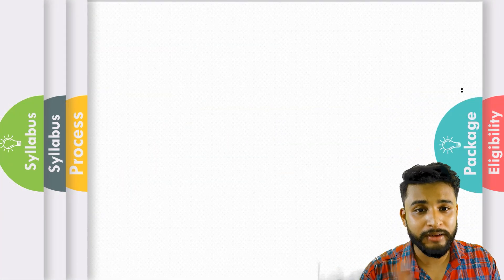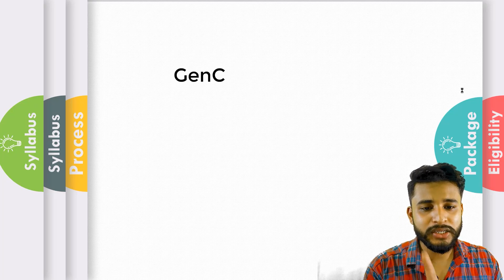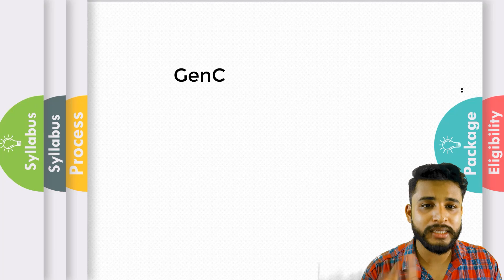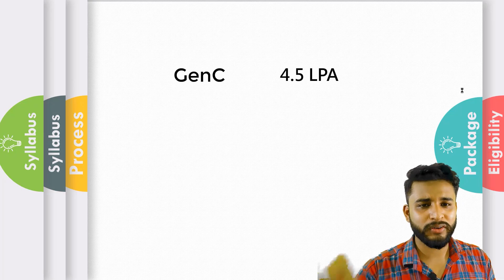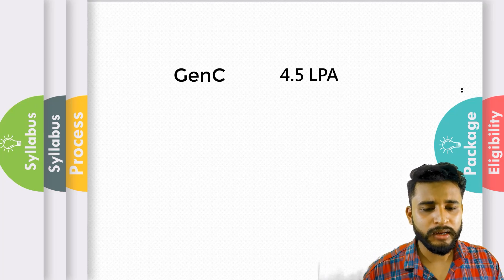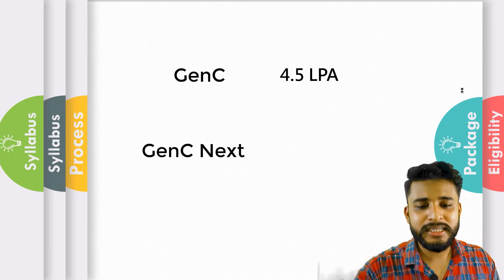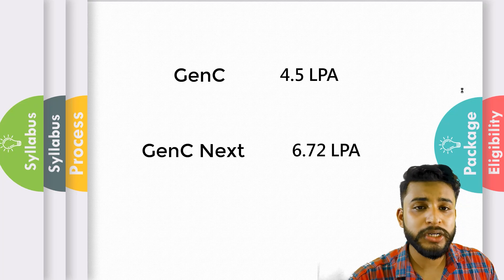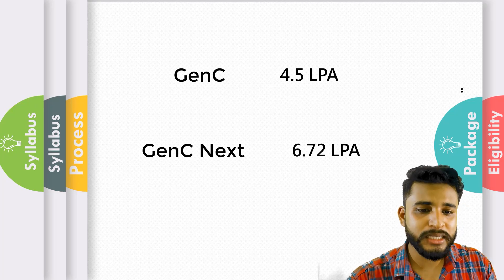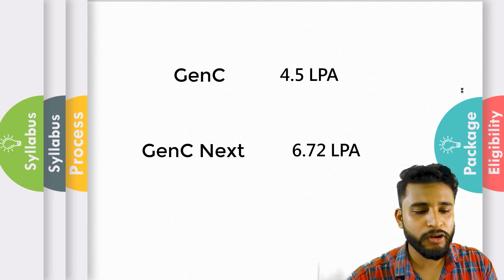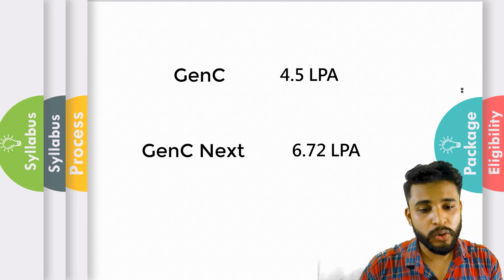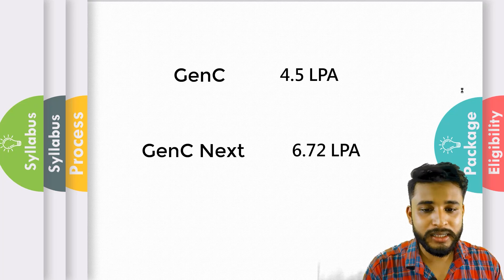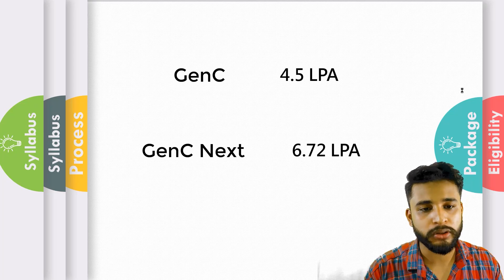Now let's see the packages. There are two types of packages Cognizant is offering. The first is Gen C, which stands for Generation Cognizant, at 4.5 LPA — similar to last year's offering. The next is Gen C Next, which is a higher package at 6.72 LPA. Both packages are for freshers only, and it will depend on your performance in the selection process which package you receive.